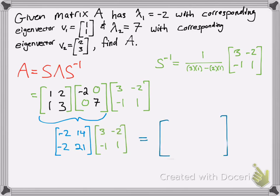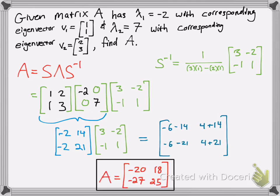Then multiply by S inverse. We get -6 - 14 and 4 + 14, then -6 - 21 and 4 + 21. That gives us matrix A: [[-20, 18], [-27, 25]].